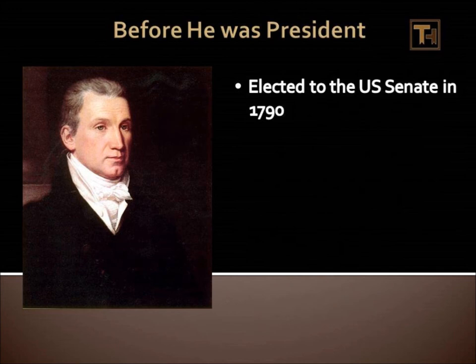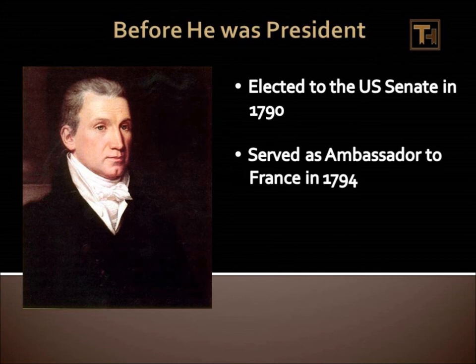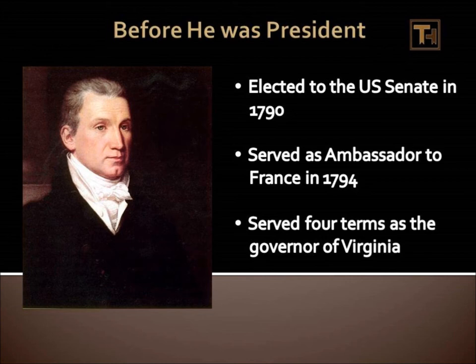In 1790, he was elected to the United States Senate. He served as the Ambassador to France in 1794, at which time he negotiated the release of Thomas Paine, who was jailed for his opposition to the execution of Louis XVI. Monroe also arranged to get all Americans free who were being held in French prisons. He also served four terms as the Governor of Virginia before he became President.